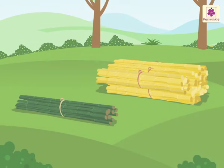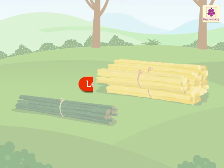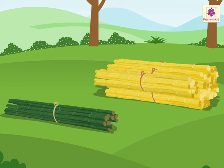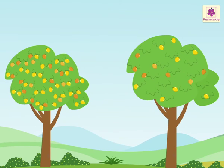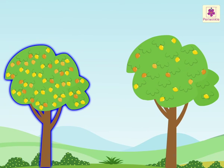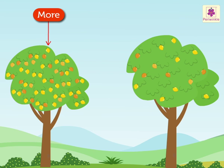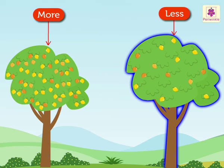Lastly, less and more. Can you see the bundles of wooden sticks? The first bundle has less wooden sticks, but the second bundle has more wooden sticks. Now, look at the two trees here. This tree has more mangoes, while this has less mangoes.